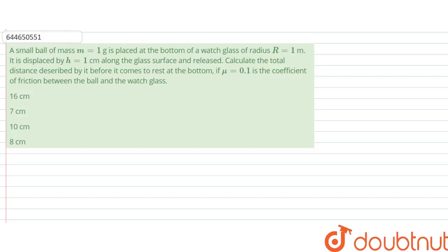A small ball of mass m equals 1 gram is placed at the bottom of a watch glass of radius 1 meter. It is displaced by height 1 centimeter along the glass surface and released. Calculate the total distance described by it before it comes to rest at the bottom.